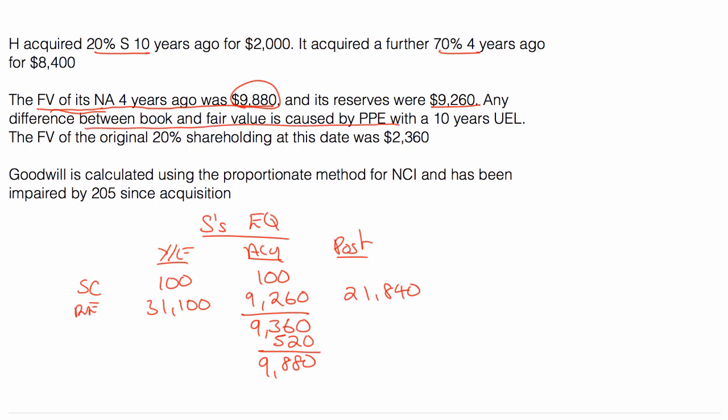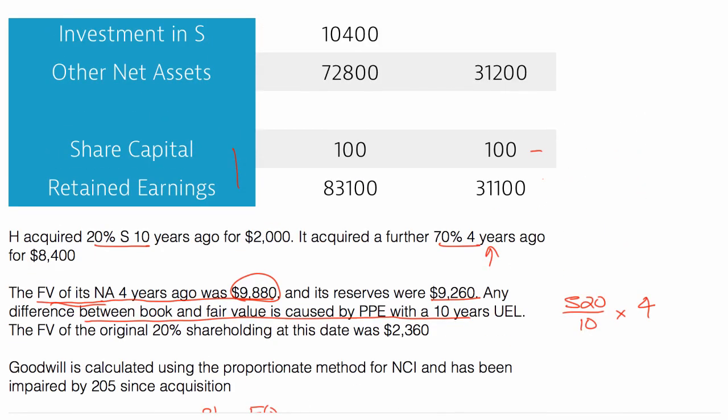The difference between the book and fair value is caused by PPE with a 10-year useful economic life. So PPE, the 520 depreciation over 10 years, depreciation by the 4 years that we've had it. So that would give me 208.